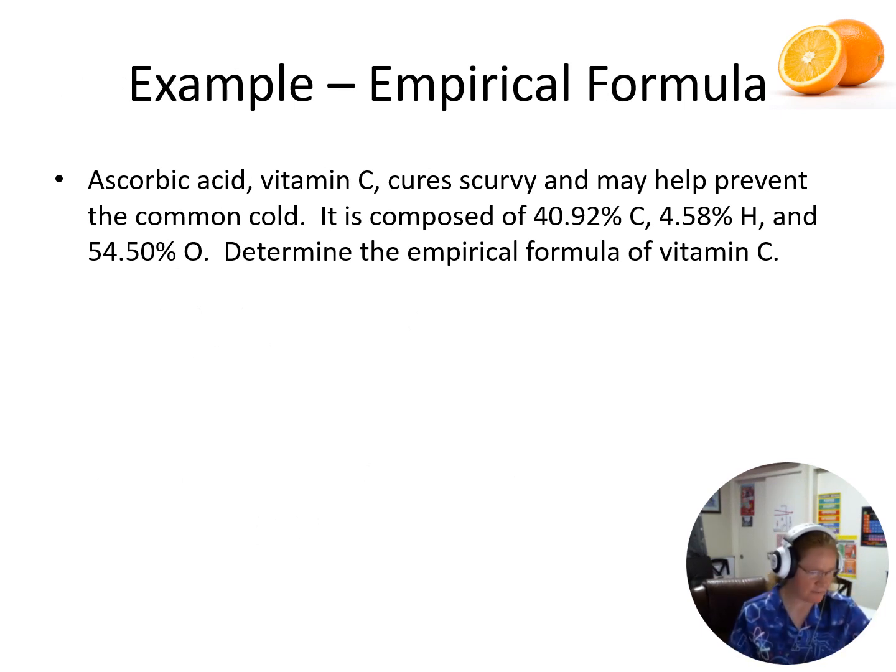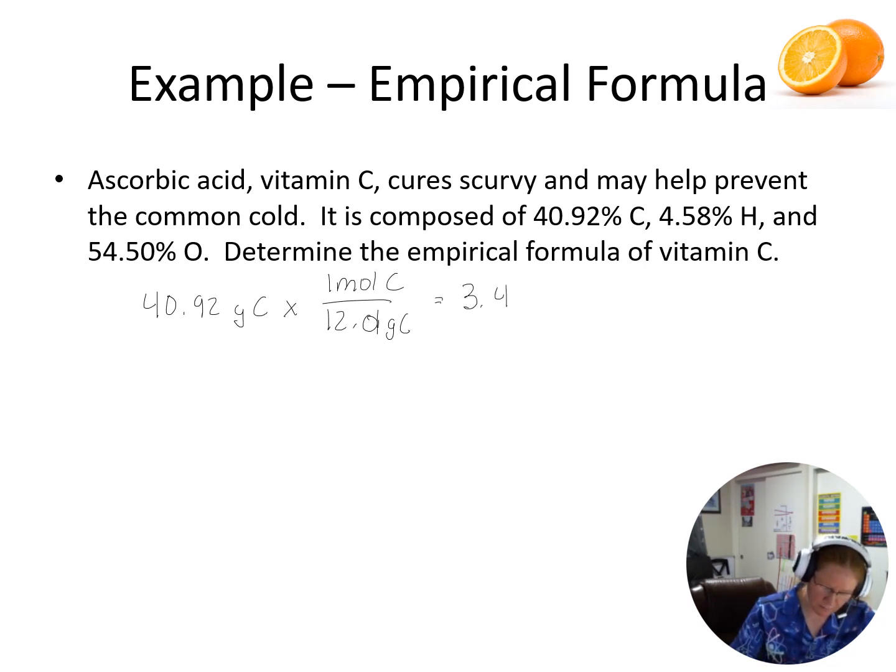So I have some vitamin C. So we have percent composition. So again, when we have our percent composition, we assume 100 grams of the compound, and so then we just take our percent, and those become the grams of each element. So we're going to do 40.92 percent carbon becomes 40.92 grams. We end up with 3.407.